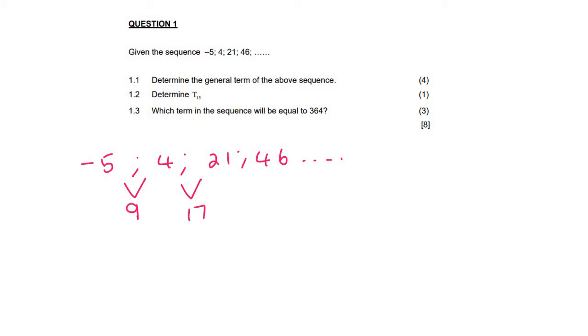Then we're adding 17, then we're adding 25. And so if we look at the second difference, it's 8 and 8. So when your second difference is constant, then we can say that this is a quadratic number pattern.